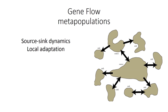Gene flow can alter the allele frequency of a population by bringing in new alleles, but it gets complicated when we think about metapopulations — populations of populations. Gene flow keeps these populations from diverging from each other, maintaining them as a single species over time while allowing for local adaptations. Another feature of metapopulations is source-sink dynamics: some populations in great habitat produce lots of offspring that disperse to smaller, less optimal habitats — those receiving populations form the sinks.